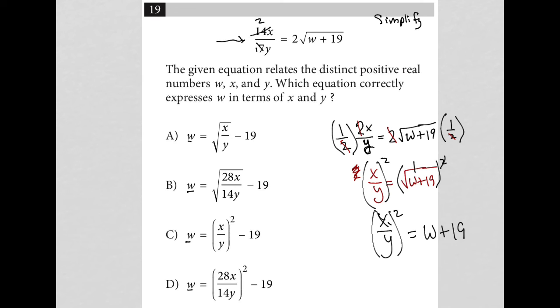And lastly, I'd want to subtract 19 from both sides. The 19 is gone from there. I'm going to move up here for more space. So I'd be left with w is equal to x over y squared and minus 19. And that looks like the answer will be choice C.